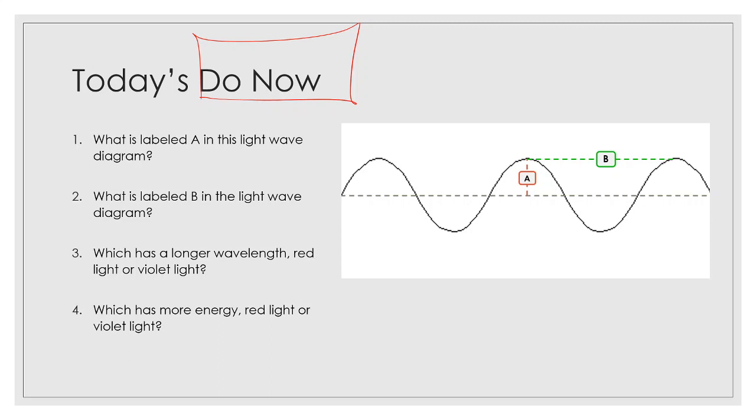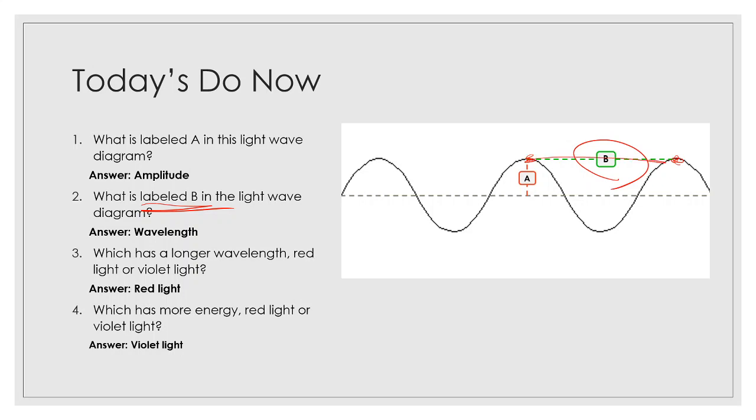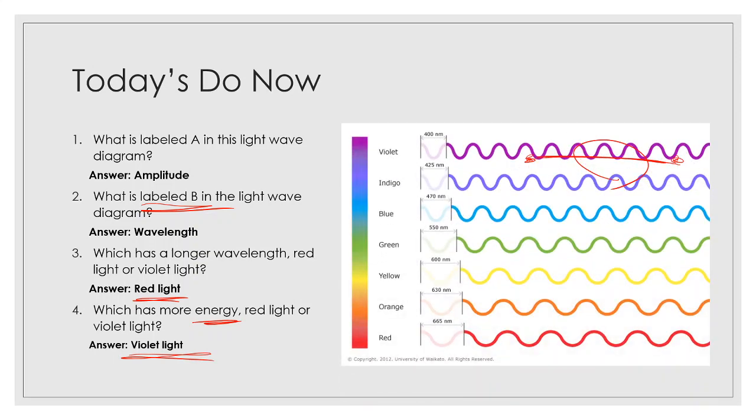And hopefully unpausing now so we can show the answers. First question is what is labeled A in the light wave diagram over here? A is telling me the amplitude. Second question, what is labeled B? B over here is the wavelength. That's the length from one crest, one peak to another crest. Three is asking me which has a longer wavelength, red light or violet light? Red light has the longest wavelengths. Then four is asking which has more energy, red light or violet light? We learned that violet light has the most energy.